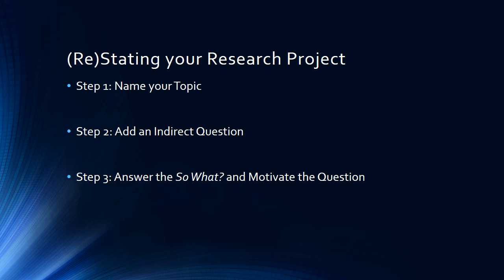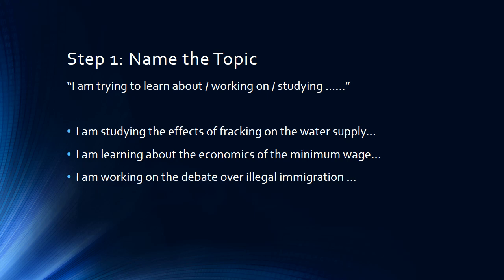One of the things you'll do for your assignment this week is to restate your research project. There are three basic steps: first, naming your topic; second, adding an indirect question; and third, answering the so what and motivating the question. For naming your topic, start with a basic statement like 'I am studying blank.' For example: I am studying the effects of fracking on the water supply. I am learning about the economics of the minimum wage. I am working on the debate over illegal immigration. These are all slightly more specific than just saying 'the economy' or 'immigration.'